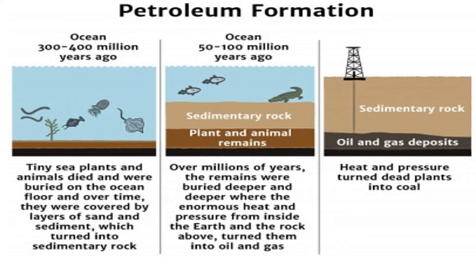How is petroleum formed? 300 to 400 million years ago, tiny sea plants and animals died and were buried on the ocean floor. Over time, they were covered by layers of sand and sediment, which turned into sedimentary rock. Over millions of years, the remains were buried deeper and deeper, where enormous heat and pressure from inside the earth turned them into oil and gas. Heat and pressure also turn dead plants into coal.